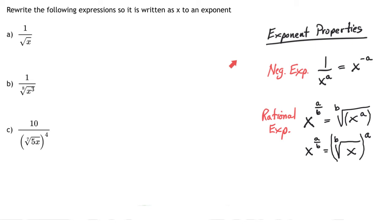Next, rational exponents. When you see any kind of value to a fraction exponent, the top number is your power and your bottom number is your root. So that means we have the b root of x to the a power. It can also be written as this, where you're doing the b root first and then the a power. The order in which you do them does not matter.